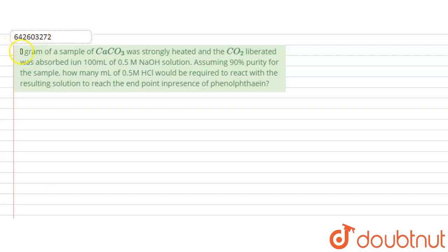The question is: one gram of a sample of calcium carbonate was strongly heated, and the carbon dioxide liberated was absorbed in 100 mL of 0.5 molar NaOH solution. Assuming 90% purity for the sample, how many millilitres of 0.5 molar HCl would be required to react with the resulting solution to reach the end point in the presence of phenolphthalein?